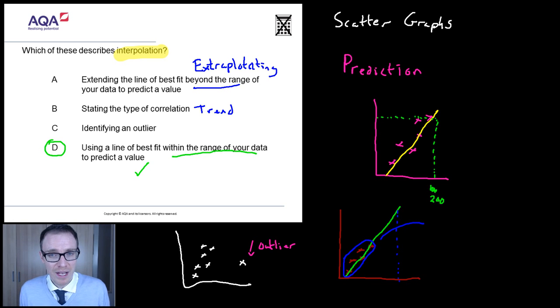So, look. Scatter graphs are alright. They're still straightforward enough. But just check. You need to be happy with interpolation, extrapolation, trend, and outliers. So, make sure you're comfortable with those concepts.